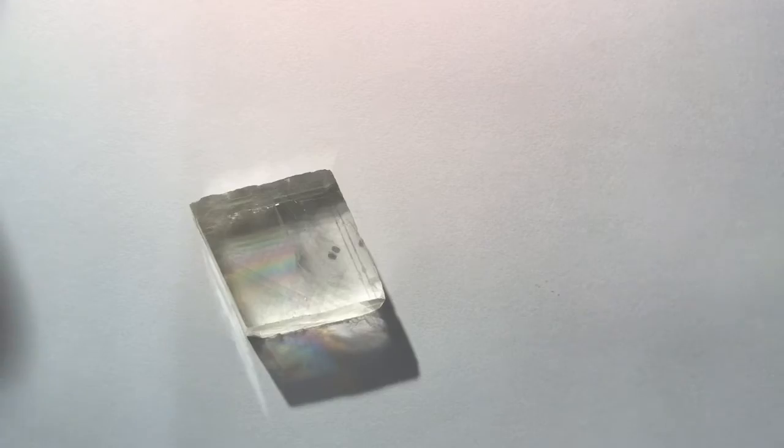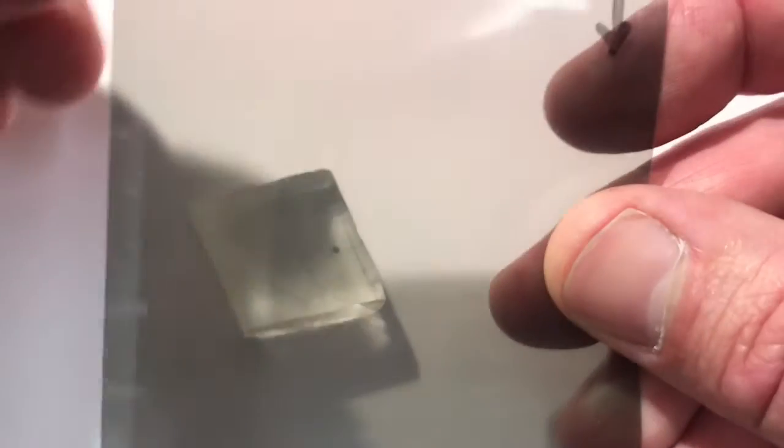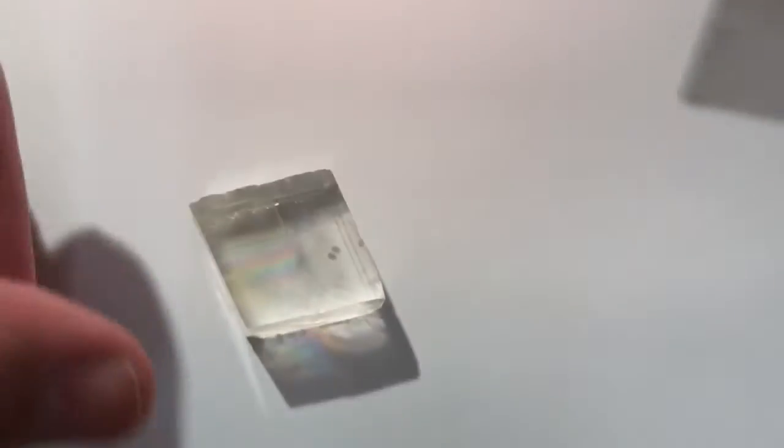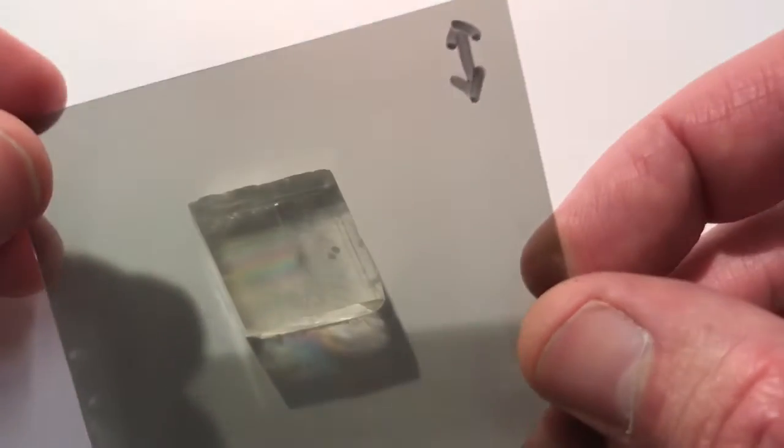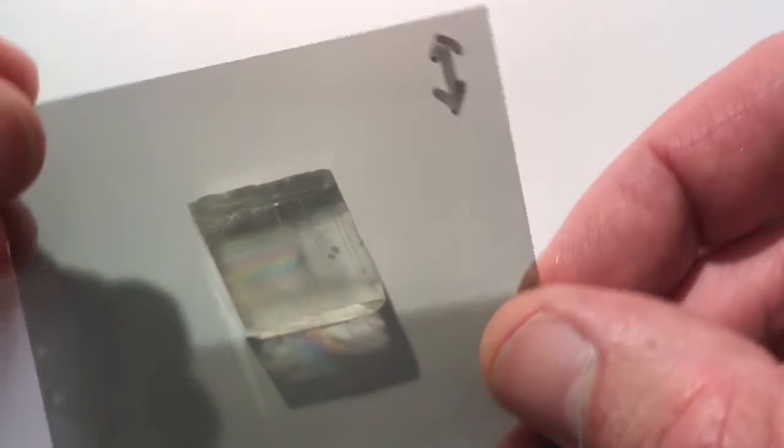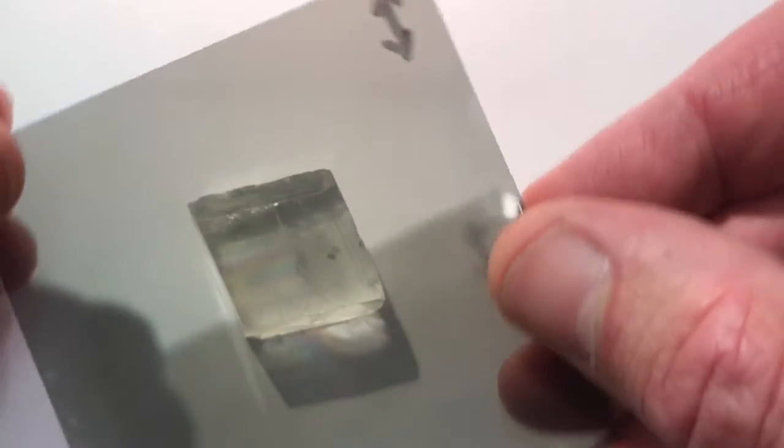The other thing we can do is put a linear polarizer in, and if I rotate that you can see it selects which dot we're looking at.